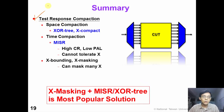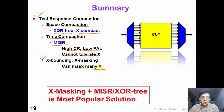In summary, in this video we introduced useful test response compaction techniques. We introduced space compaction such as exclusive-OR trees and the X-compactor. We also introduced time compaction — our old friend MISR — which has very good compaction ratio and low aliasing probability, but cannot tolerate X. So we need X-blocking or X-masking techniques. The X-masking technique combined with MISR or exclusive-OR trees is the most popular test response compaction solution so far.